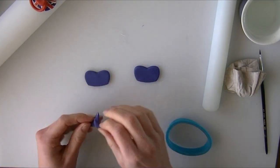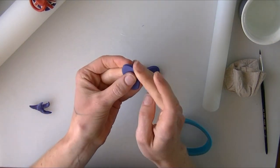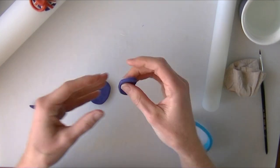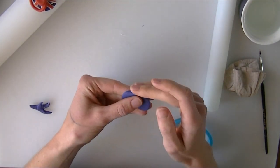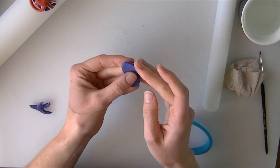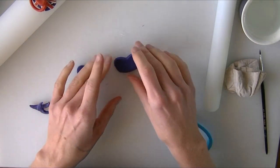I'm just going to gently round off that edge so that we don't have a little point. That's going to give us our basic dummy shape, or pacifier, as it's known in other countries.